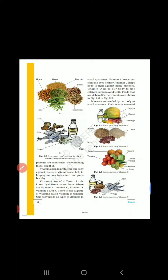अभी तक हमने 3 nutrients की बात की — proteins, carbohydrates, and fats। अब जो 2 nutrients बचे हैं वो होते हैं vitamins and minerals। So first of all, let us talk about vitamins।